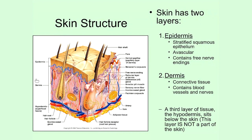The epidermis is composed of a stratified squamous epithelium — basically many, many layers of those flattened, squamous-shaped cells. Because the epidermis is an epithelium covering a body surface, it is avascular, meaning it doesn't have a blood supply. If you look closely, there aren't any blood vessels that actually penetrate all the way up into that stratified squamous epithelium that makes up the epidermis.